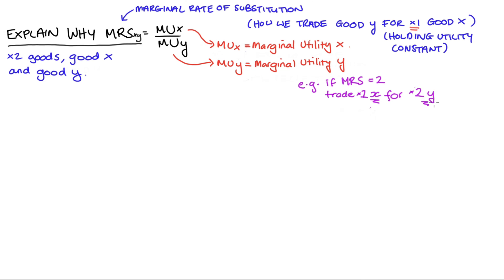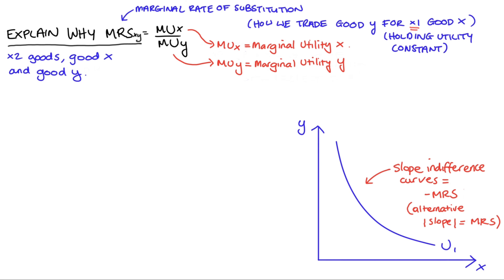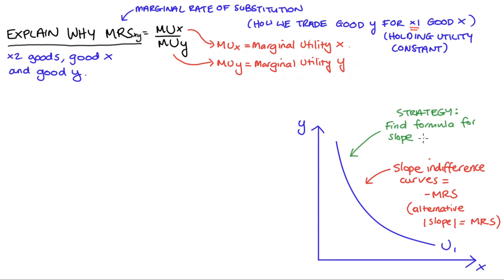The trick to understanding why this is our formula for our MRS is to first acknowledge that the slope of our indifference curve, when x is on the horizontal axis and y is on the vertical, is actually equal to the negative of our MRS. You might alternatively see this as: MRS equals the absolute value of the slope. The key is that the slope of our indifference curve will be a negative number, but our MRS is expressed in positive terms. The connection between our MRS and the slope of the indifference curve gives us a strategy: we first find a formula for the slope of the indifference curve, and in doing that we're indirectly finding our formula for our MRS.